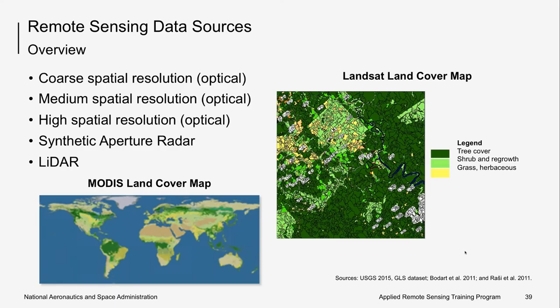There are multiple types of useful remotely sensed data available for monitoring forests. They vary in spatial resolution, temporal resolution, and data type. We'll briefly discuss some of the attributes of coarse, medium, and high optical imagery, and a little bit about radar imagery.